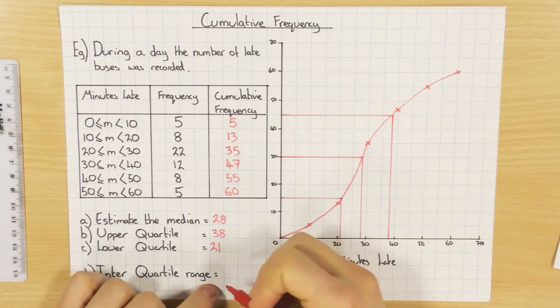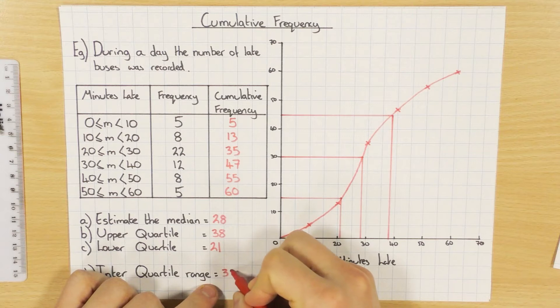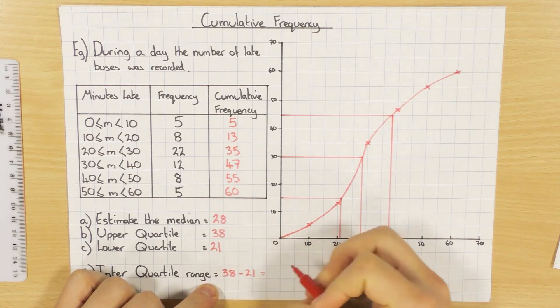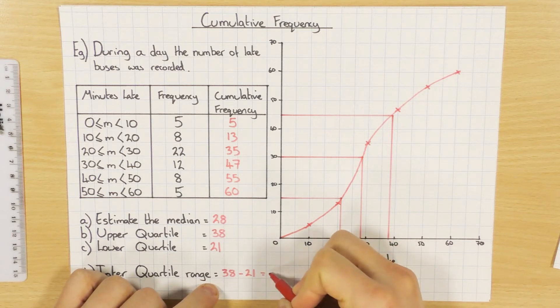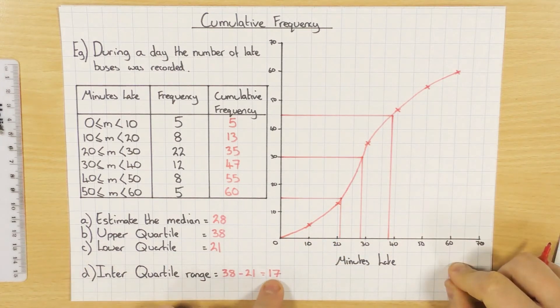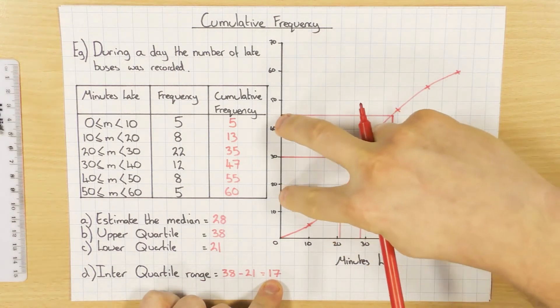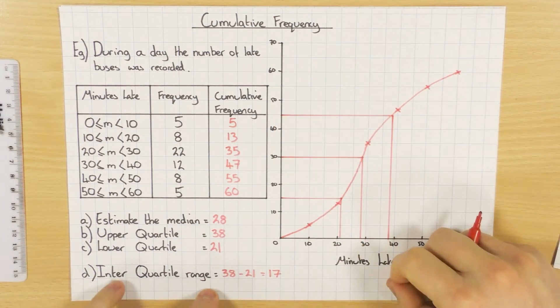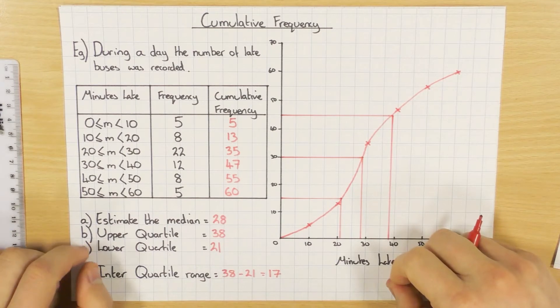And then the interquartile range, you just subtract the two. So the upper quartile, which we said was 38, take away 21. So what's that going to be? 17. So the interquartile range is 17. So 50% of all the values are within the interquartile range. And that works out at 17.